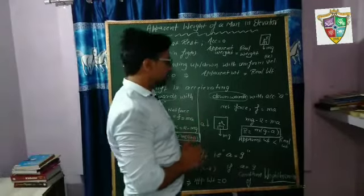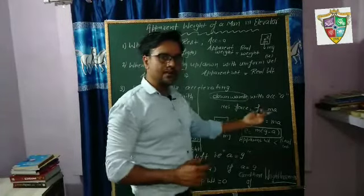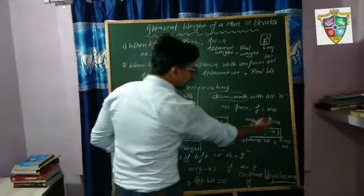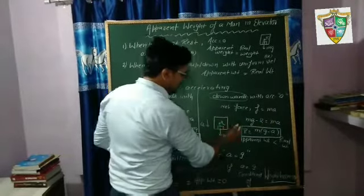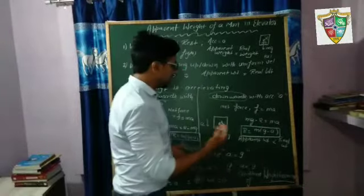But in case of downward motion of the lift with acceleration A, the net force is similarly F is equal to MA. Now in this case, MG minus R is equal to MA or we calculate R is equal to MG minus MA. Means apparent weight is lesser than the real one.